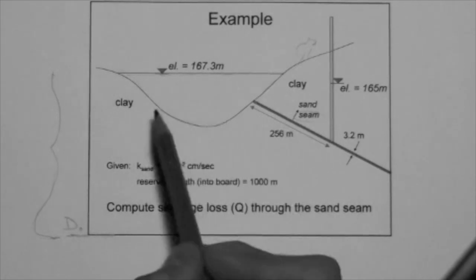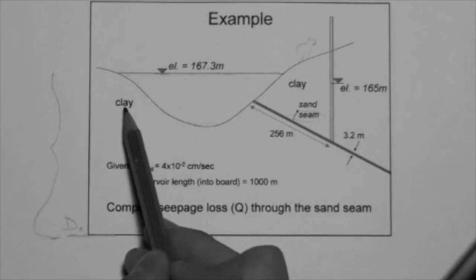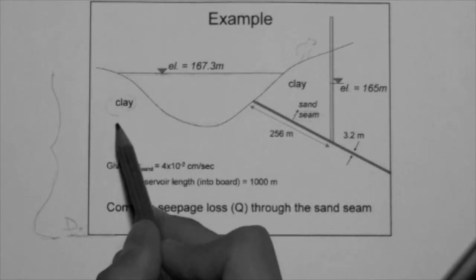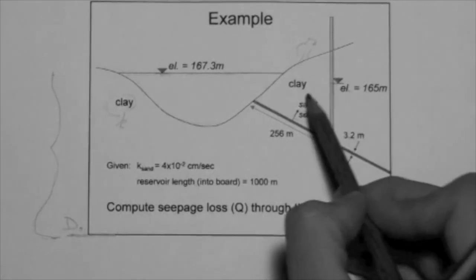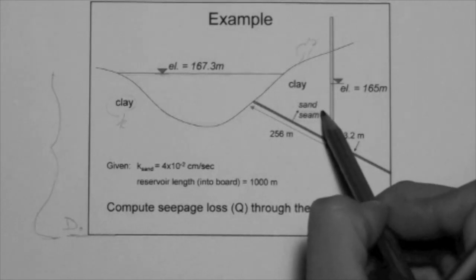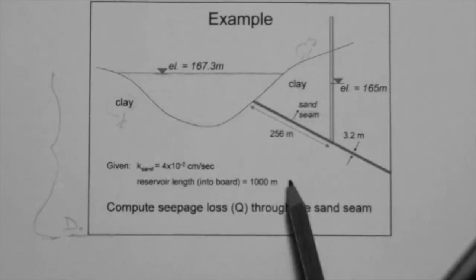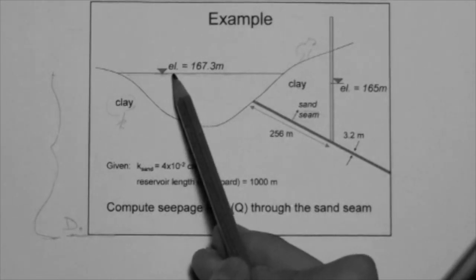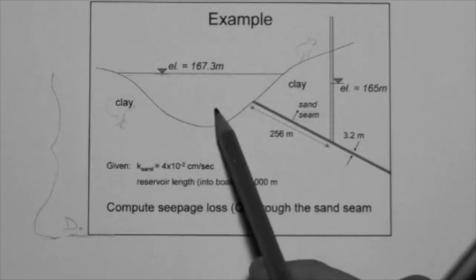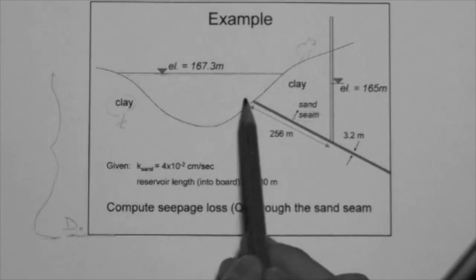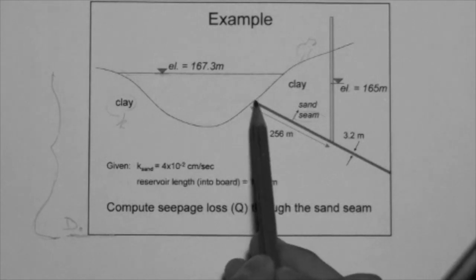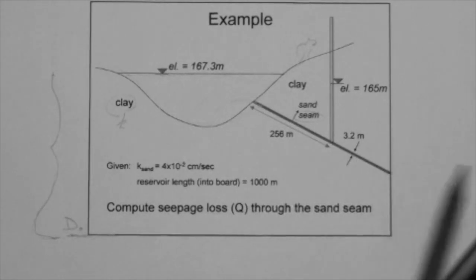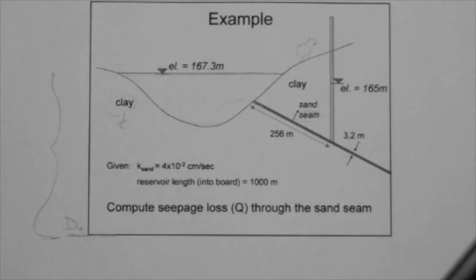So as you can imagine, as you know already, clay has a low permeability, a low hydraulic conductivity, and sand has a much larger hydraulic conductivity. So what's happening here is that this lake water is seeping through the sand seam and exiting somewhere else.